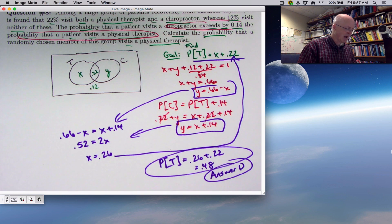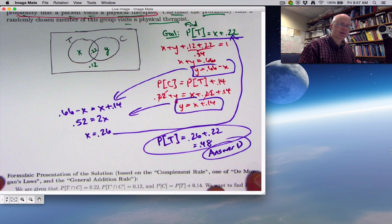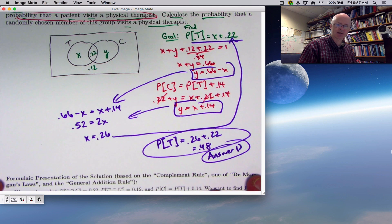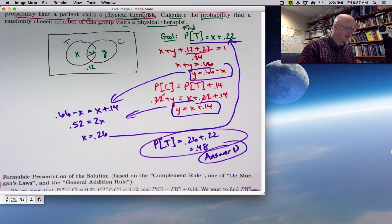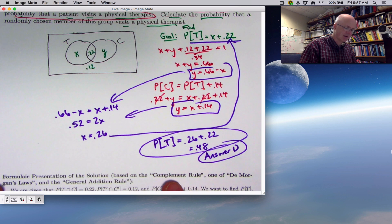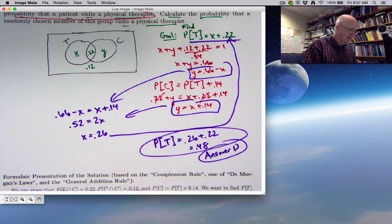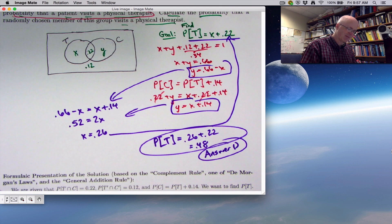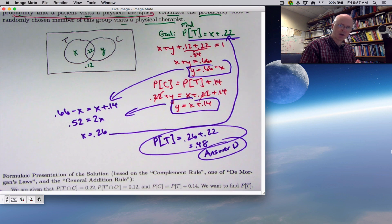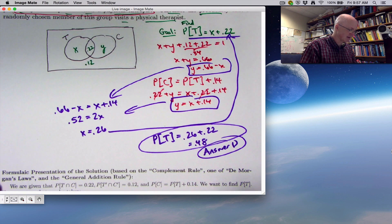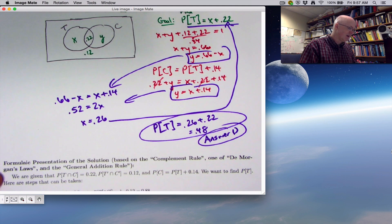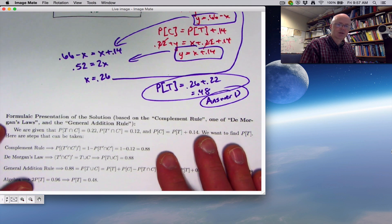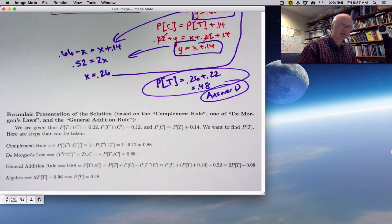Now let's take a step back. Let's talk about a formulaic presentation of the solution based on some laws and rules - the complement rule, one of DeMorgan's laws which I haven't talked about yet, and the general addition rule. DeMorgan's law is intuitive if you're used to this kind of thing, but at first it seems a little confusing. Probably the hardest part is just the notation.